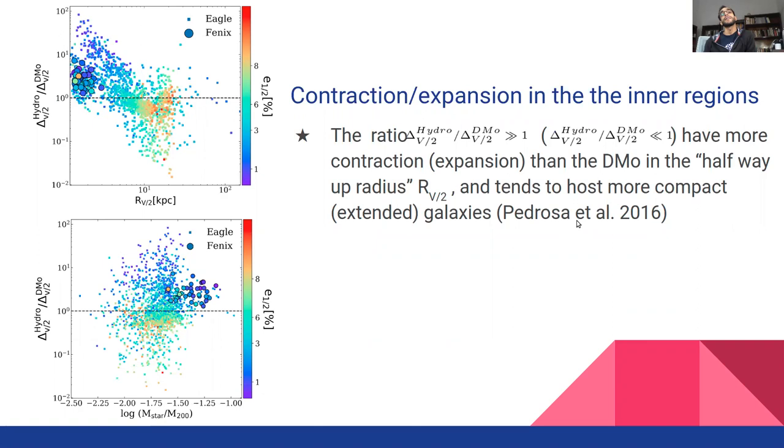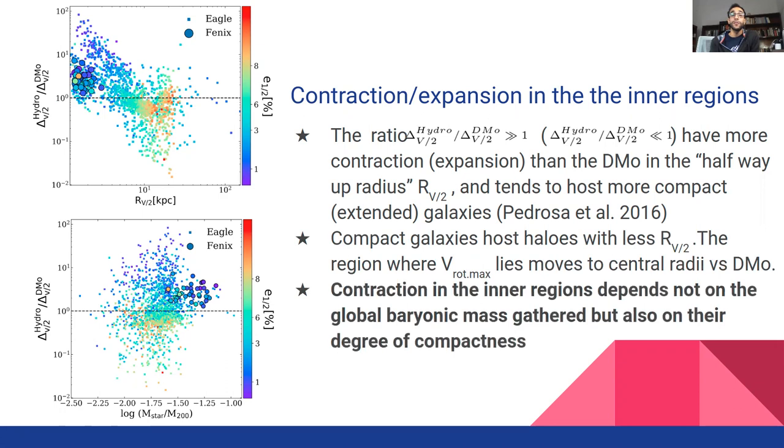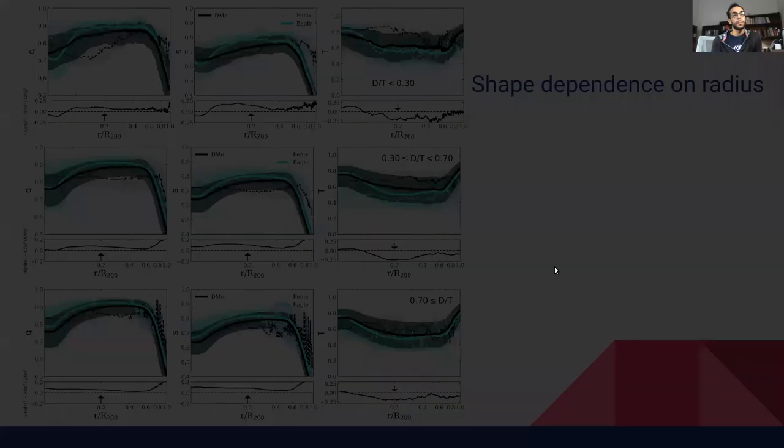The halos also expand for extended galaxies. This is the yellow or red dots. The compactness of galaxies appears as a key parameter to trace the degree of contraction of the dark matter halos.